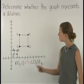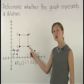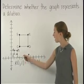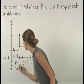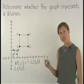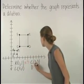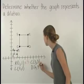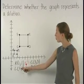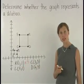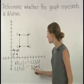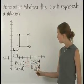Next, notice that point L corresponds to point D. Point L has the coordinates, and point D has the coordinates. Again, the coordinates of point L have been multiplied by the scale factor 3 to get the coordinates of point D.